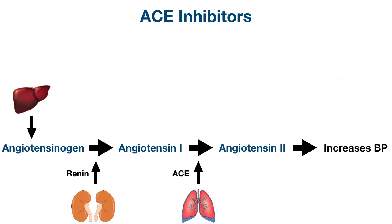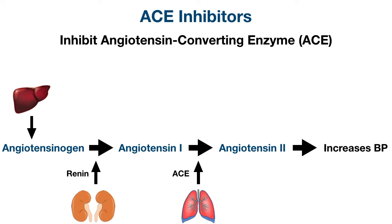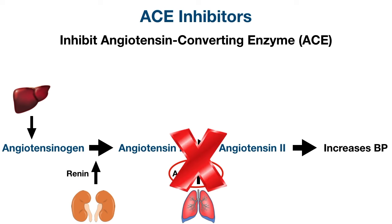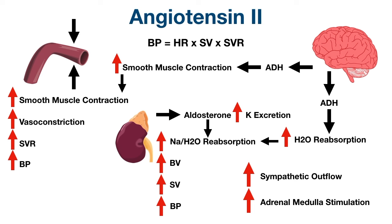Now let's look at how ACE inhibitors work — they block the normal physiology of the renin-angiotensin-aldosterone system. As the name suggests, ACE inhibitors inhibit angiotensin-converting enzyme, which converts angiotensin 1 into angiotensin 2. Blocking ACE decreases production of angiotensin 2, which decreases blood pressure. With less angiotensin 2, there is less vascular smooth muscle contraction, less vasoconstriction, and therefore decreased systemic vascular resistance, which decreases blood pressure.